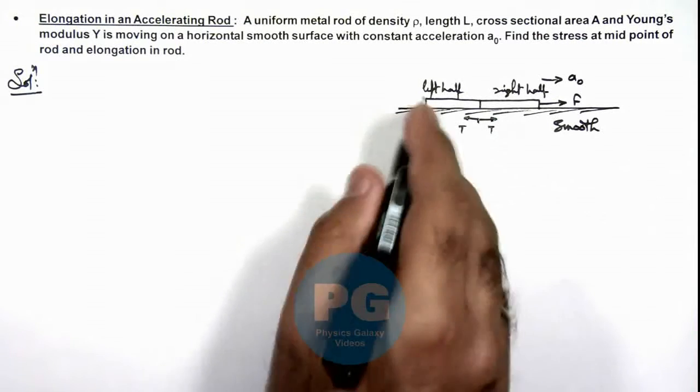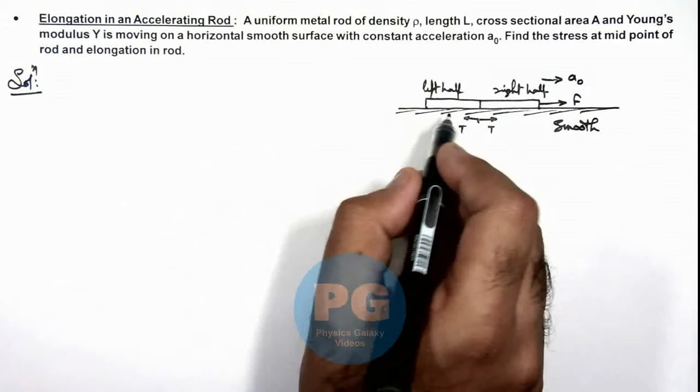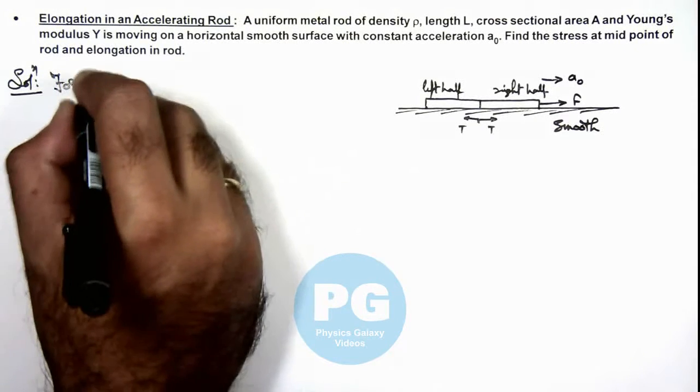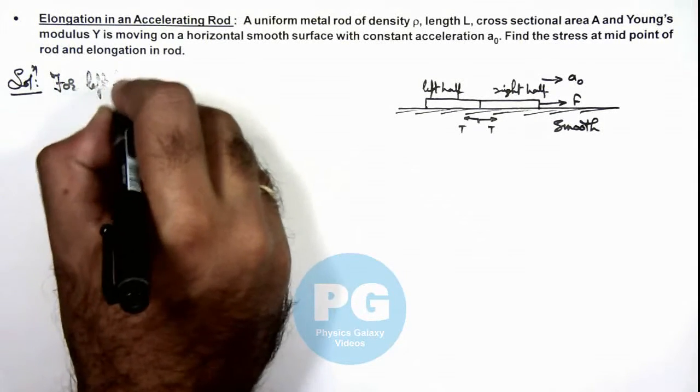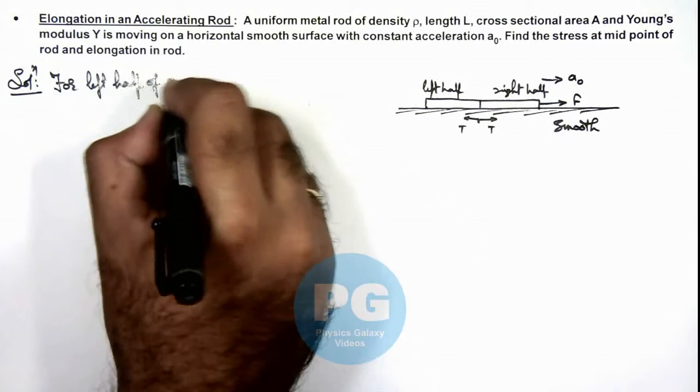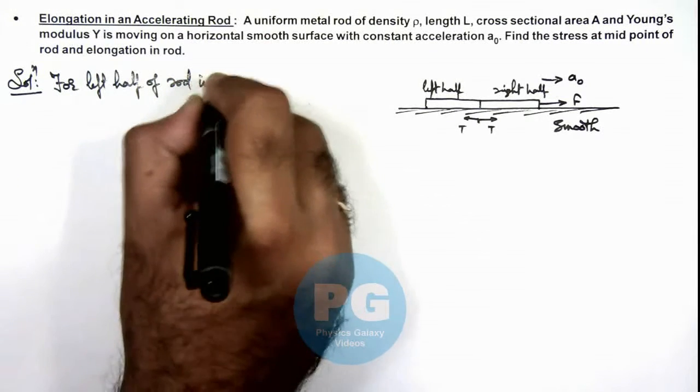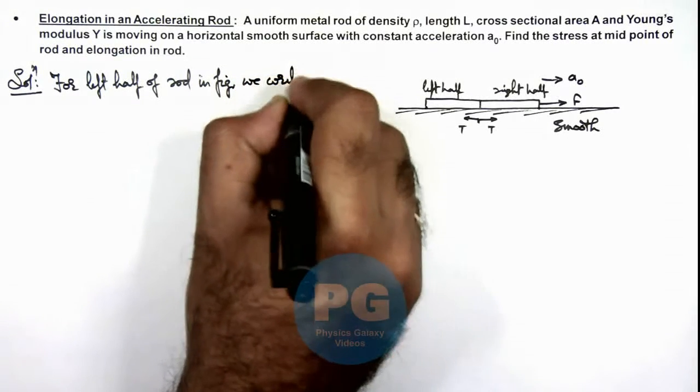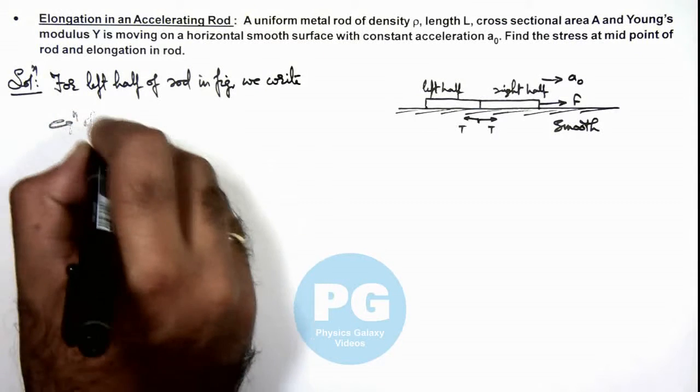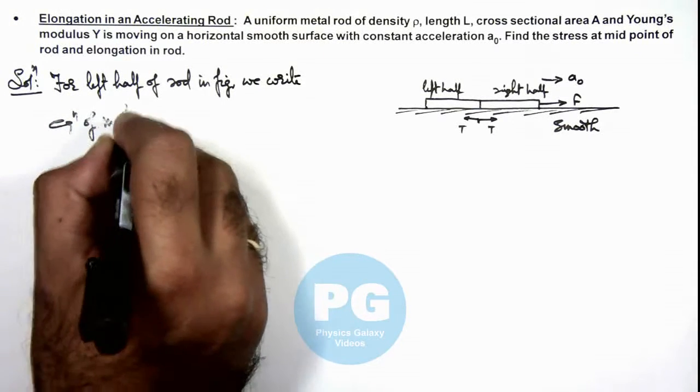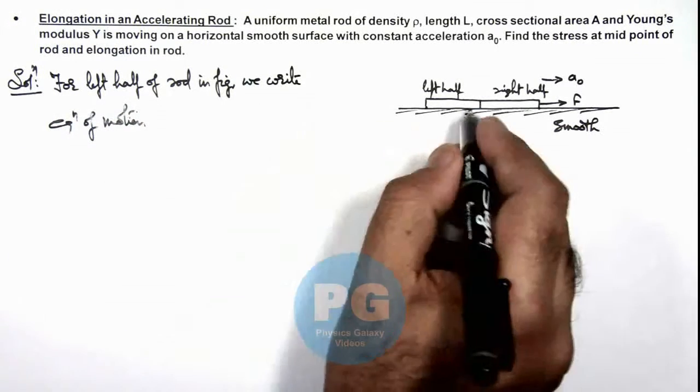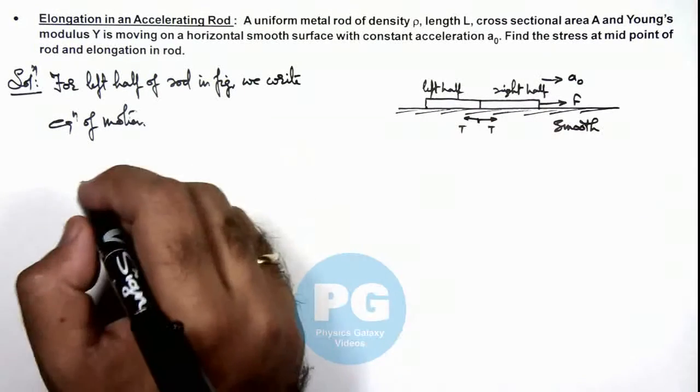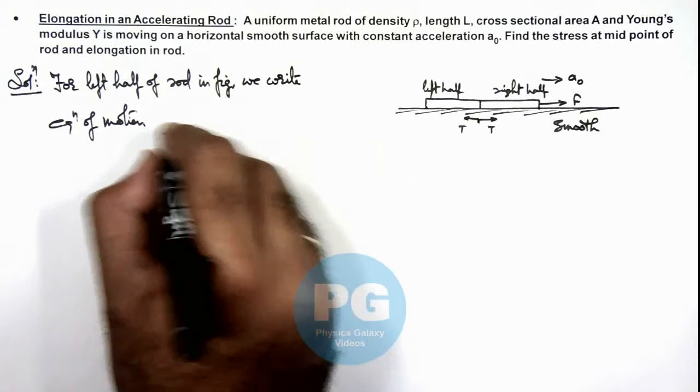Now if we apply Newton's law on the left half of rod, you can write for left half of rod in figure, we write equation of motion. This can be written as, on left half only tension is acting which is responsible for the acceleration, so we can write T is equal to